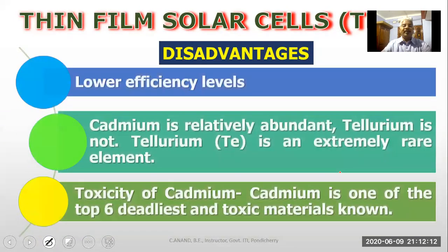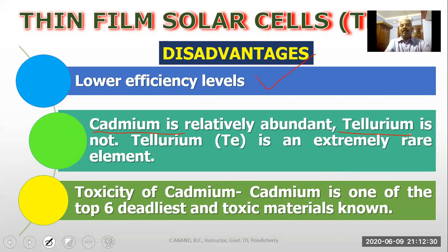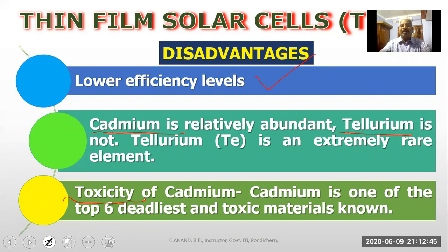But there are disadvantages. Efficiency is very low. Cadmium is relatively abundant but tellurium is a rare element. Also, cadmium is a toxic material — it is one of the top 6 most toxic materials known.